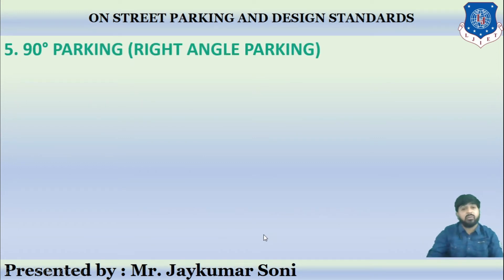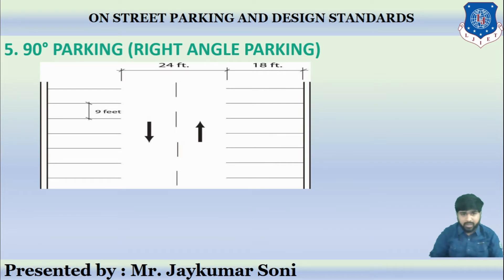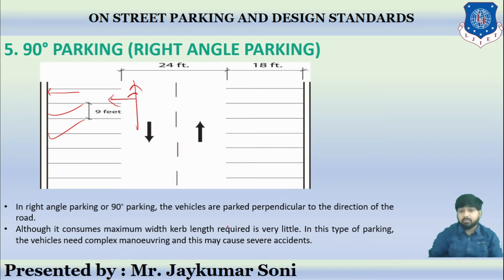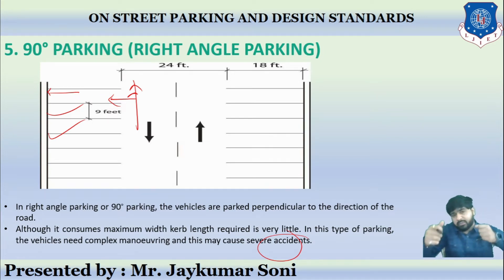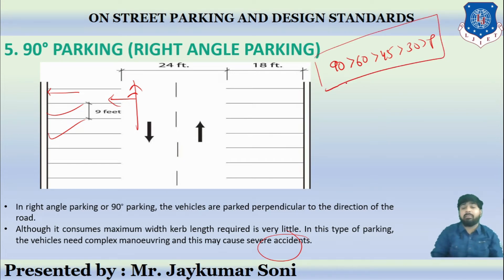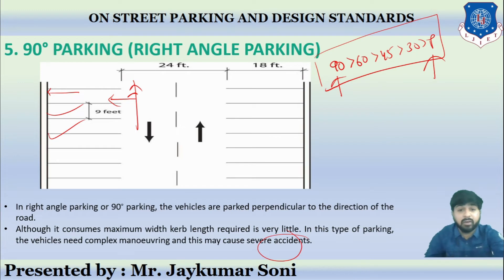Then comes right-angle or 90-degree parking. The maximum number of vehicles can be parked, though it consumes the maximum width with less length requirement. However, it can cause accidents due to complexity while maneuvering. In summary: 90-degree parking accommodates the most vehicles, and parallel parking accommodates the least, for a given curb length.